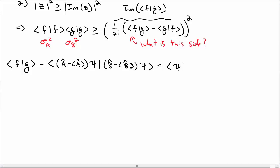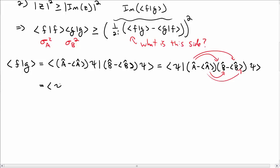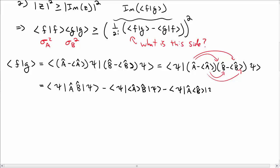Since A is Hermitian, I can move it into the bra to get A operator minus its expectation value. Distributing through gives four terms: ⟨psi|A-hat B-hat|psi⟩, minus ⟨psi|⟨A⟩ B-hat|psi⟩, minus ⟨psi|A-hat ⟨B⟩|psi⟩, and finally ⟨psi|⟨A⟩⟨B⟩|psi⟩.